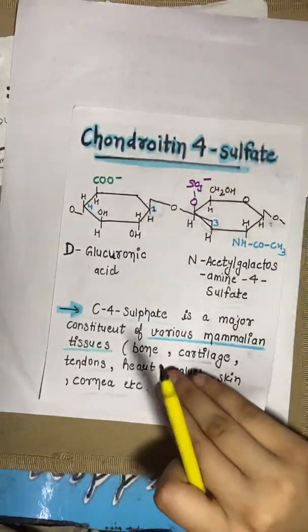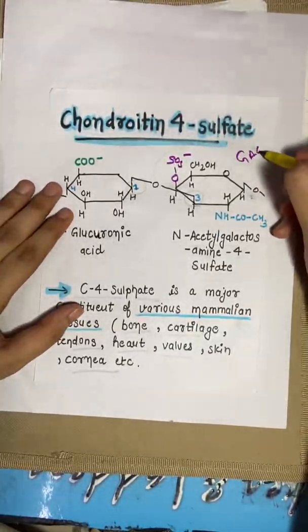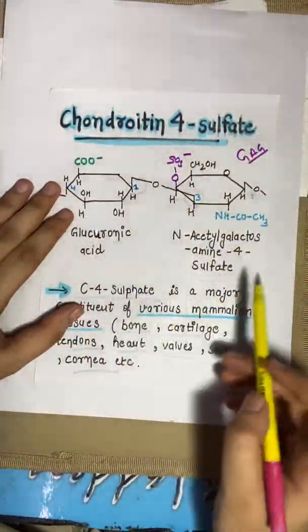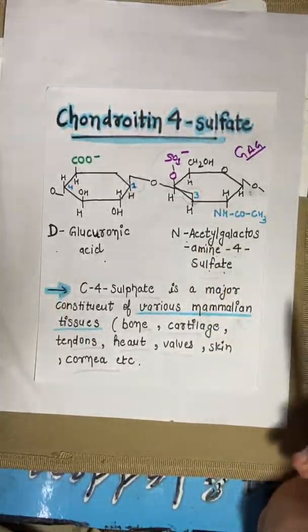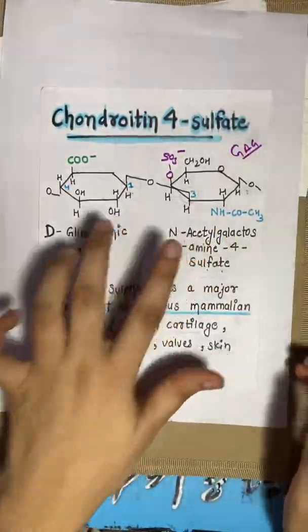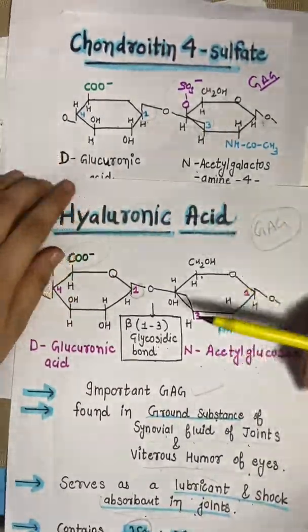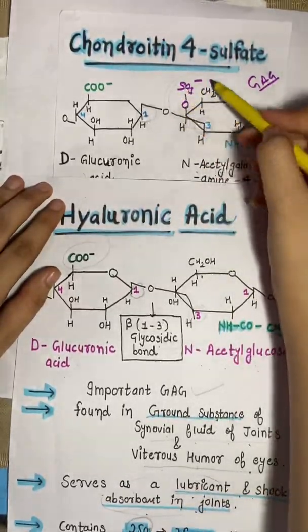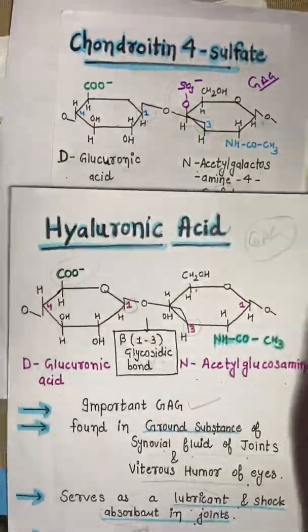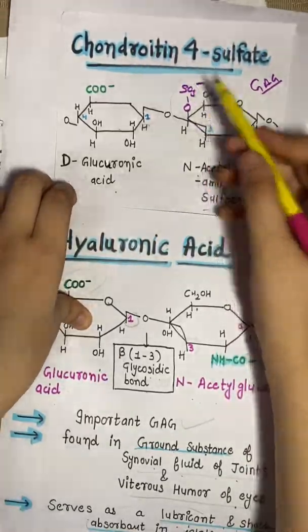The second GAG is chondroitin 4-sulfate. Its structure is made of D-glucuronic acid and N-acetyl galactosamine 4-sulfate, joined at the first and third carbon. This structure is very similar to hyaluronic acid — the main difference is the presence of a sulfate group on N-acetyl galactosamine, making it N-acetyl galactosamine 4-sulfate.